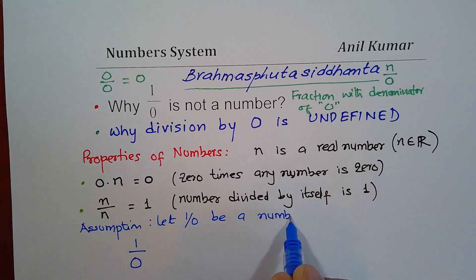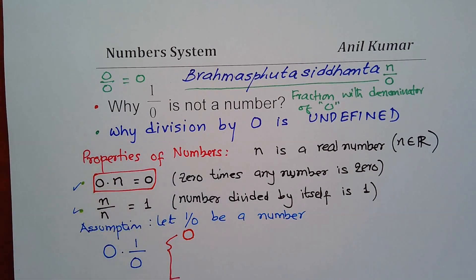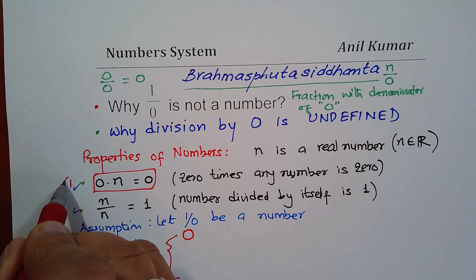Now, if 1 over 0 is a number, these two properties should be satisfied. Perfect. So that is to say that if I multiply this by 0, then what should I get? Well, in that case, I should get 0, right? According to my property 1. According to my property 1, I should get 0. So let me write down 1 here. So this is according to 1.